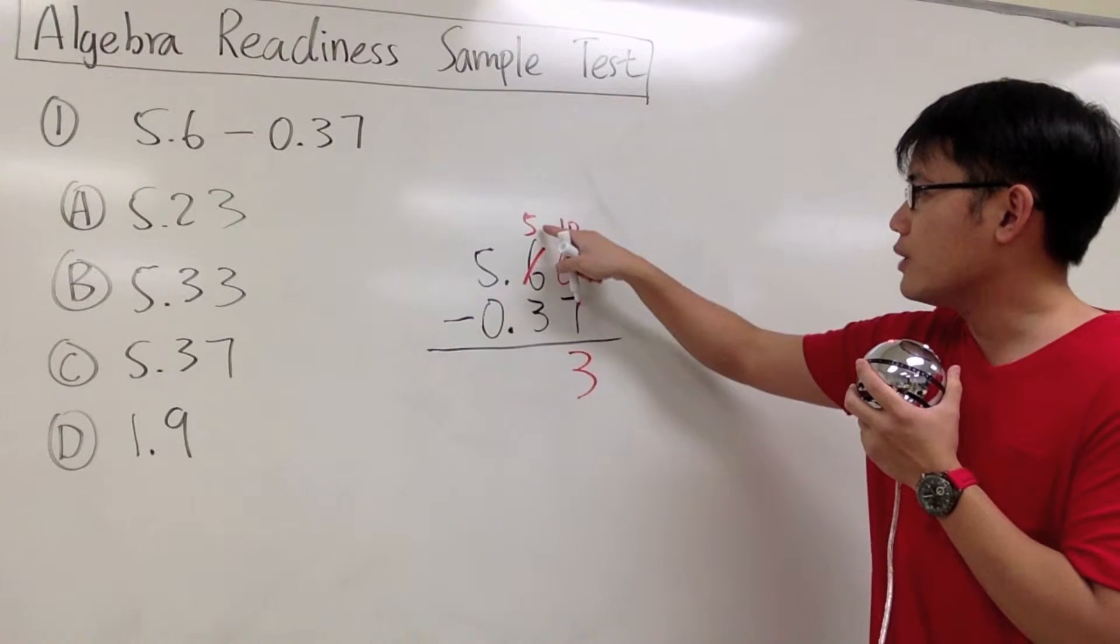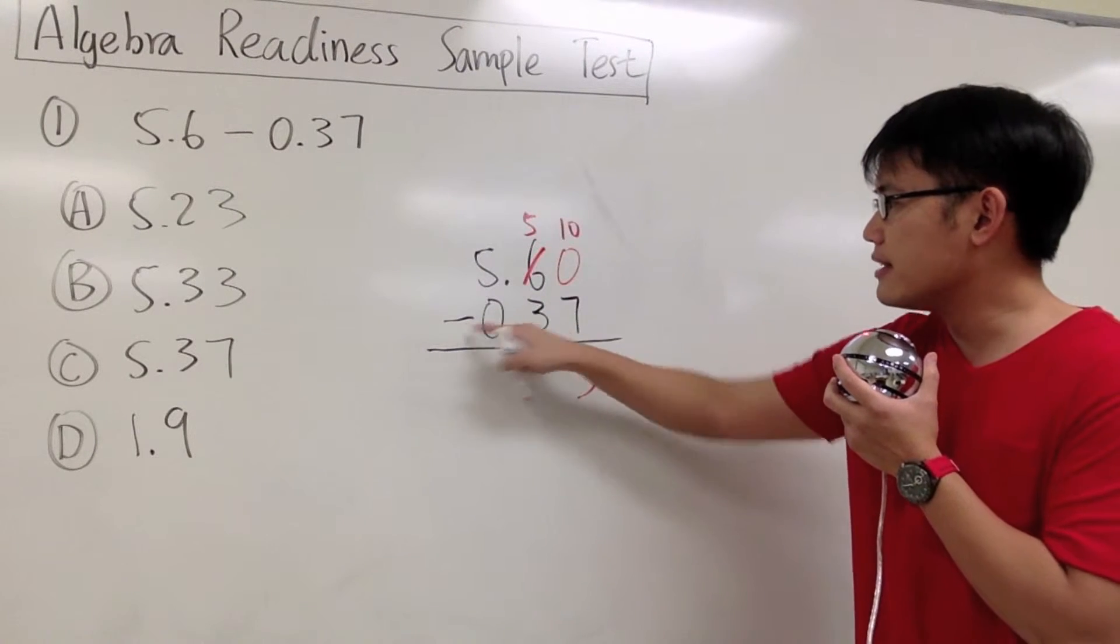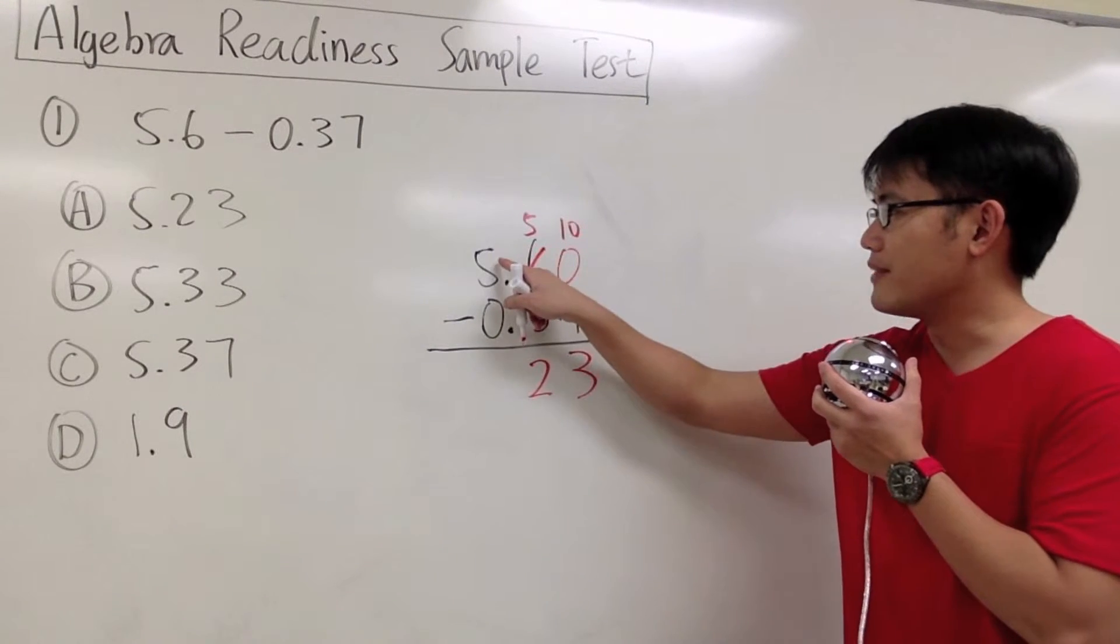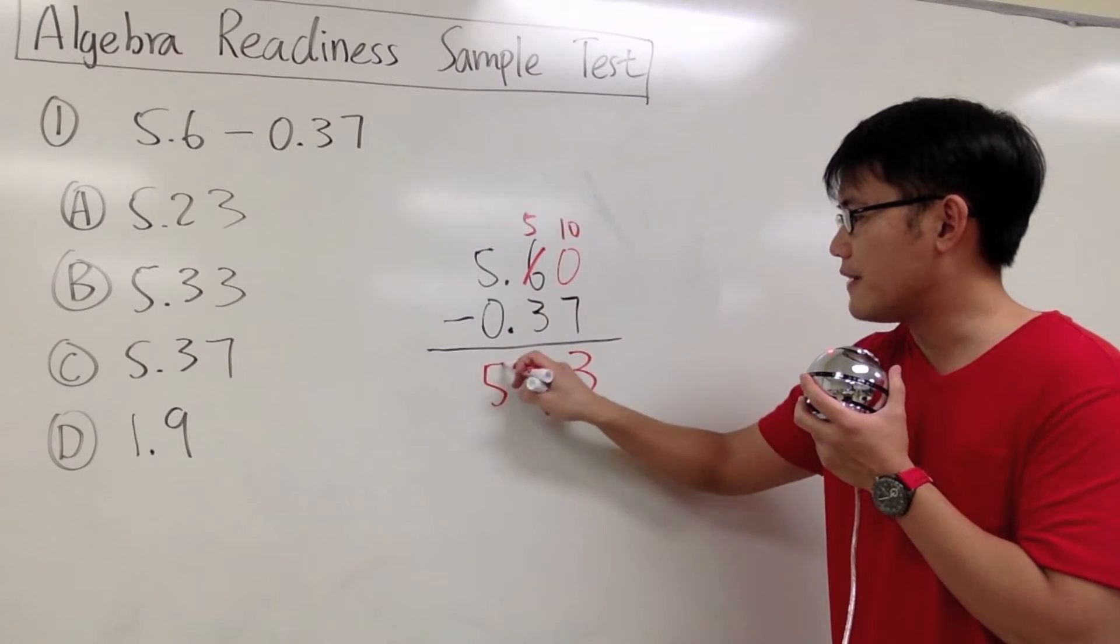And then we'll continue with the next one. We will have 5 minus 3, that will give us 2. And then we will have 5 minus 0, that will give us 5.